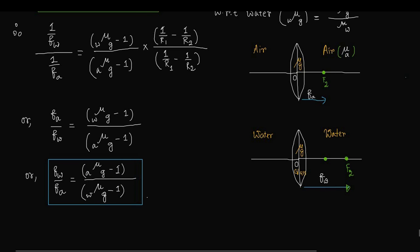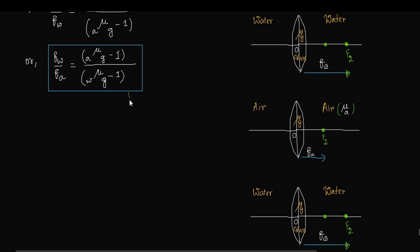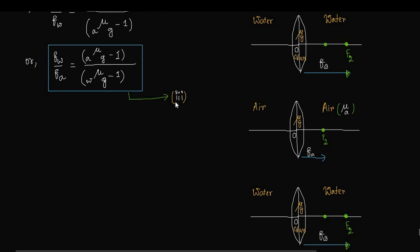So we get the ratio of focal length of the lens in water to that in air. This is Equation 3: Fw/Fa = (a_mu_g − 1) / (w_mu_g − 1).